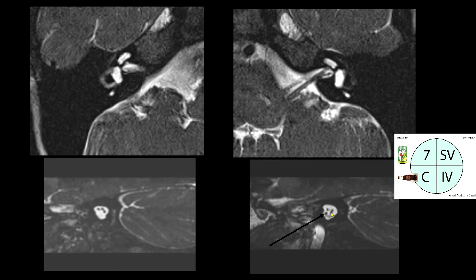Now let's shift to this patient. We don't see the same anatomy — we have the anterior superior seventh cranial nerve ('seven up'), the superior vestibular nerve, and the inferior vestibular nerve, but we are missing the cochlear nerve. This is a patient who has congenital sensorineural hearing loss due to cochlear nerve aplasia, nicely demonstrated on this CIS/Fiesta/Turbo Field Echo three-dimensional pulse sequence with the three-dimensional reconstruction in an oblique coronal plane.